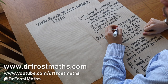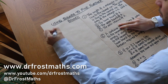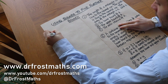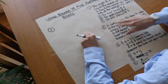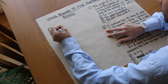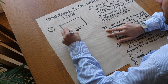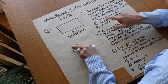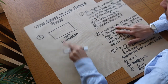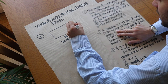Hello and welcome to this video on using bounds to find further bounds. Let's dive straight into this problem. The length of a rectangle is 11 centimetres to the nearest centimetre, and the width is 6 centimetres to the nearest centimetre.